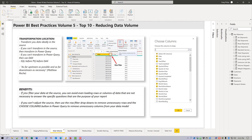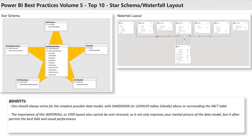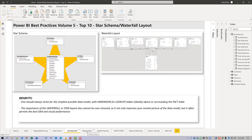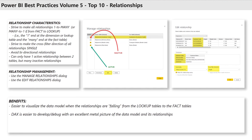Star schema: one should always strive for the simplest possible data model with dimension or lookup tables above or surrounding the fact table. The importance of this waterfall or star layout cannot be overstressed, as it improves your mental picture of the data model and often permits the best possible DAX and visual performance. Strive to make all relationships one-to-many with the one end at the dimension and the many end at the fact table, and avoid bi-directional relationships if you can, unless your model really needs them. Remember that you can only have one active relationship between any two tables, but you can have many inactive relationships.